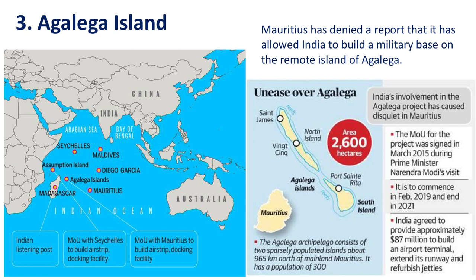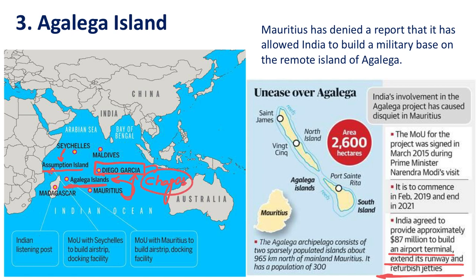Next issue is Agalega Island. It is an island in the Indian Ocean region belonging to Mauritius. India and Mauritius have made a deal to build a jetty, refurbish jetties, build an airport terminal, and extend the runway on this island. It was reported that India is building a military base in this region, but Mauritius has denied that — that is why it's in the news. Similarly, we have Assumption Island, which belongs to Seychelles. There is also Diego Garcia, which is part of the Chagos Islands.